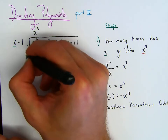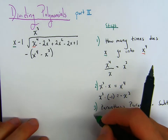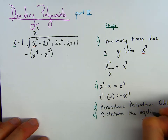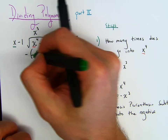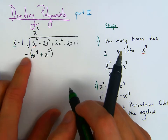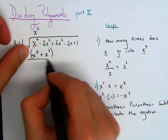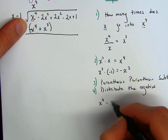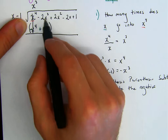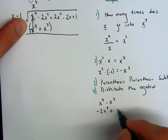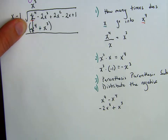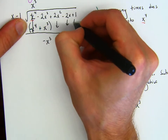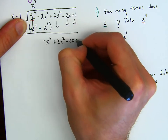We need to distribute the negative. So this would be a negative x to the fourth, and this will be a positive x cubed — a negative times a negative is a positive. So now we have x to the fourth minus x to the fourth, which cancels. Then we're going to have negative 2x cubed plus x cubed — pause the video — what would we get? We would get negative x cubed. So this negative x cubed comes down here, and then we bring down all the other terms: plus 2x squared minus 2x plus 1.